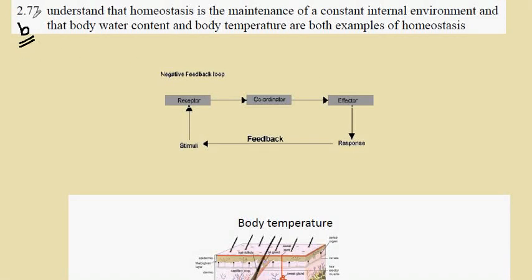IGCSE Biology Syllabus Statement 277B, developing the idea of the control of body temperature. In our diagram here we have what is known as a negative feedback loop, which is a method of control and maintaining constant conditions.